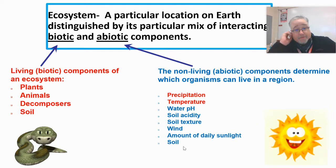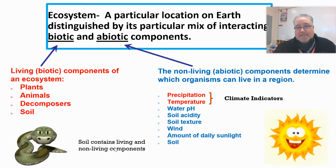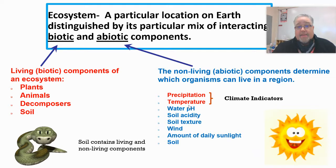I also listed soil under abiotic — be a little careful with this, especially for AP students. Soil can be categorized as both biotic and abiotic: the living components of soil are biotic, while the non-living components are abiotic. Now, the first two abiotic factors — precipitation and temperature — are actually important because they determine climate. The climate in an area is due to how much precipitation it gets per year and what the average temperature is. These two are what we call climate indicators.